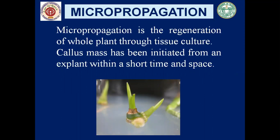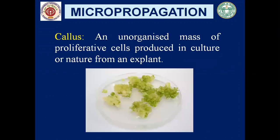In the last class we have seen what is an explant. Now we will see what is a callus. Callus is an unorganized mass of proliferating cells produced in culture or nature from an explant or a plant organ. In this picture you can very clearly see this is callus — an unorganized mass of proliferating cells. They are not differentiated.